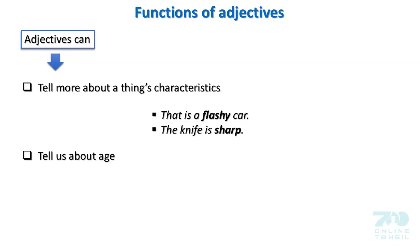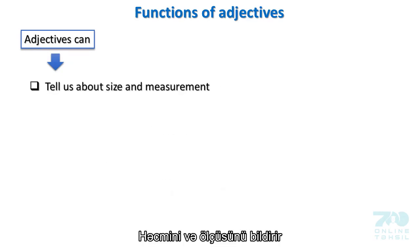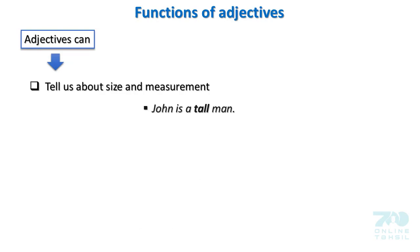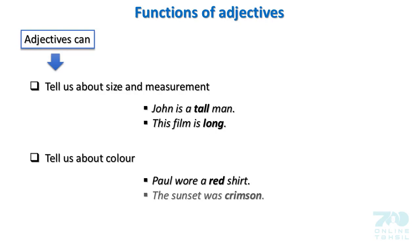Adjectives can tell us about age. Examples: He is a young man. My coat is old. Tell us about size and measurement. Examples: John is a tall man. This film is long. Tell us about color. Examples: Paul wore a red shirt. The sunset was crimson.